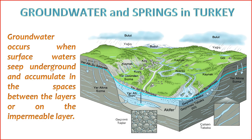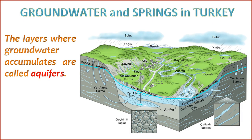Groundwater is formed as surface waters infiltrate underground, gathering in the voids between layers or on impermeable layers. An aquifer is a permeable geological formation, typically underground, that contains and transmits groundwater. It consists of materials such as gravel, sand, sandstone, or limestone that can hold and transmit water through their pore spaces. Aquifers are vital sources of freshwater, and they play a crucial role in supplying water for wells and springs.